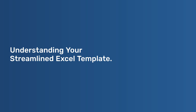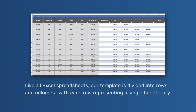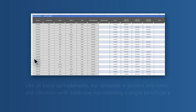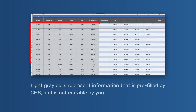Understanding your streamlined Excel template — fewer errors, faster reporting. Like all Excel spreadsheets, our template is divided into rows and columns, with each row representing a single beneficiary. The blue topmost column headers delineate beneficiary demographic input fields and each of the CMS Web Interface measures. Pre-filled data: light gray cells represent information that is pre-filled by CMS and is not editable by you.